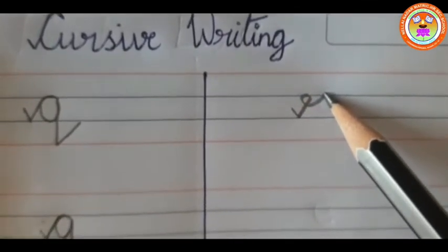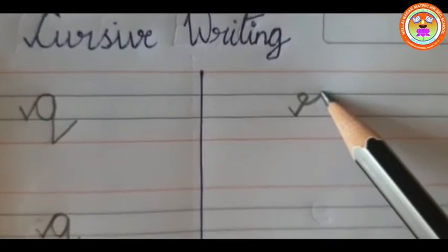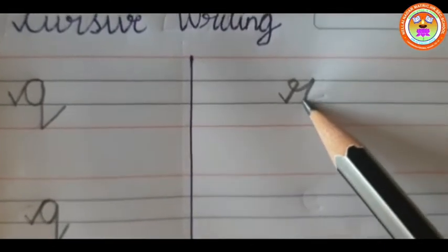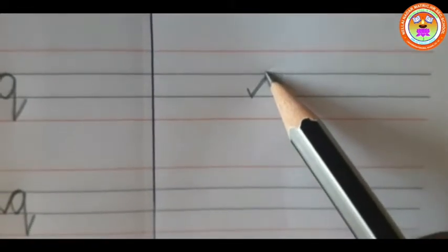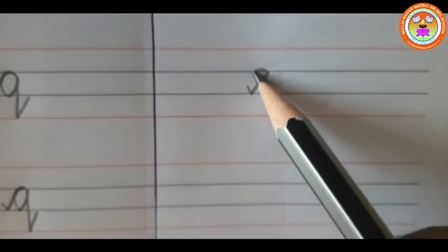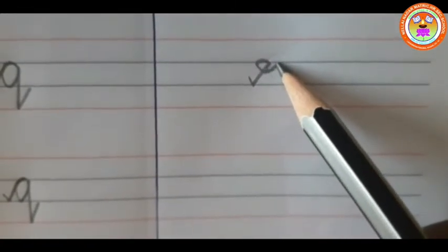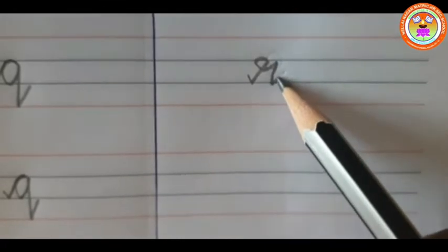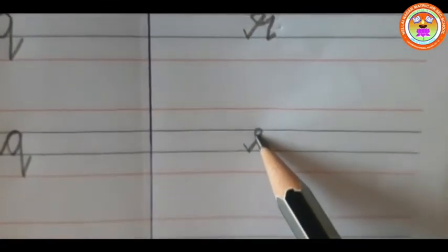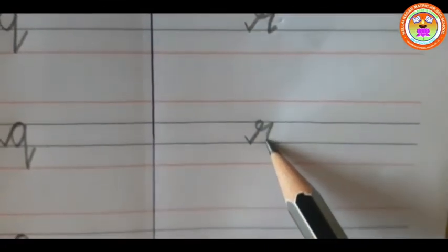Now, without taking your pencil, slanting line and take. Small tick, turn back, again come back here. And another slanting line, take. This is small letter cursive R.